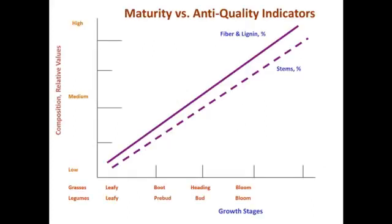This graph illustrates what happens as our forages mature, whether that's a grass or a legume. As they go through their maturity stages, we see an increase in fiber and lignin, which are relatively undigestible, and in stem percentage. Generally, we expect forage quality to decrease as the forage plant gets older, and forage maturity is probably our greatest predictor of forage quality.